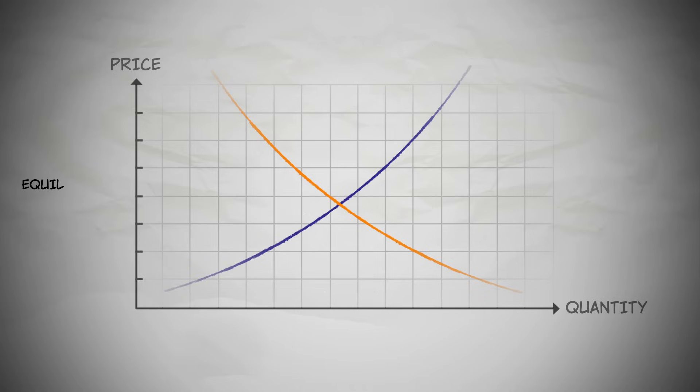Let's start with the punchline. The equilibrium price is the price where the quantity demanded is equal to the quantity supplied. Right here. And this is the equilibrium quantity.